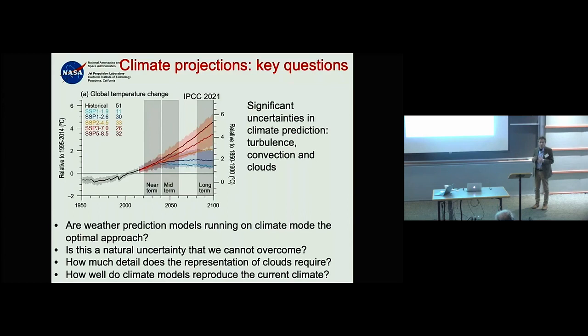There are probably more differences between two randomly chosen weather models than between weather models and climate models in general. So the approach since the 1960s has been to use weather-type global models for climate projections.